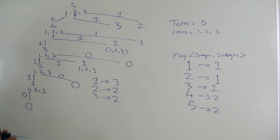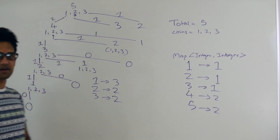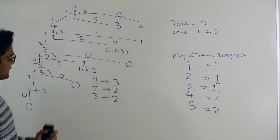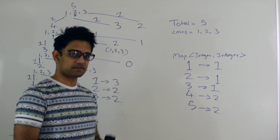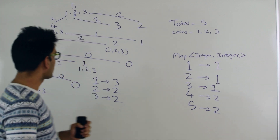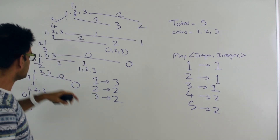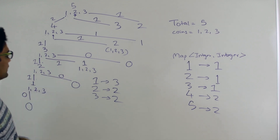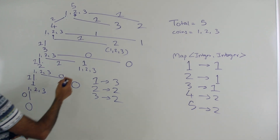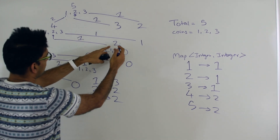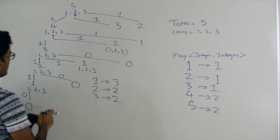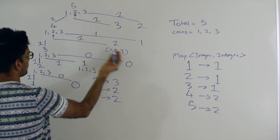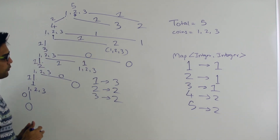Hopefully this helps you understand how the recursion works, and how memoization avoids re-entering the recursion. Instead of recalculating totals like 2, 1, and 3 again, we simply use the values already stored in the map and return them directly.